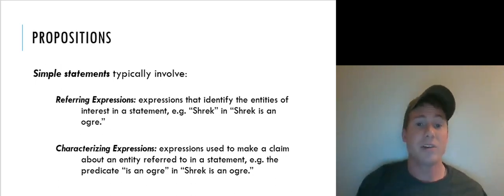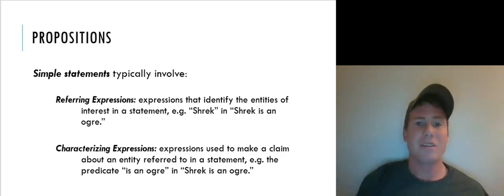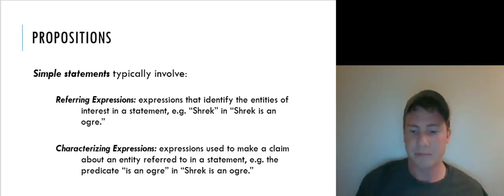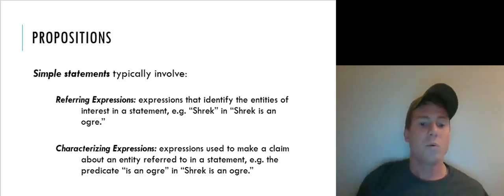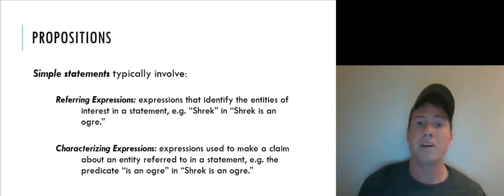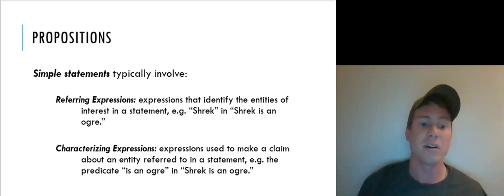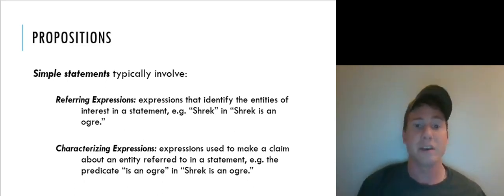Now, all the propositions we've considered so far have been what we might call simple statements. Simple statements are propositions that you can decompose into two basic components: referring expressions and characterizing expressions. Referring expressions identify the entities of interest — they pick out the objects we're discussing. For example, in the statement 'Shrek is an ogre,' the word 'Shrek' is a referring expression.